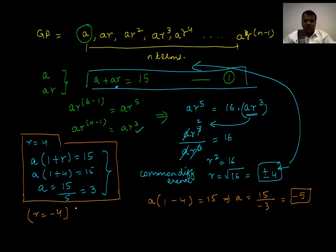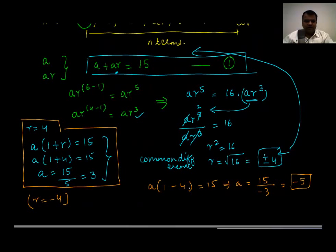So I've got two values of a and two values of r. Hence we will also have two GPs. GP1 will have a = 3, r = 4. So you will have 3, 12, 48, and so on.